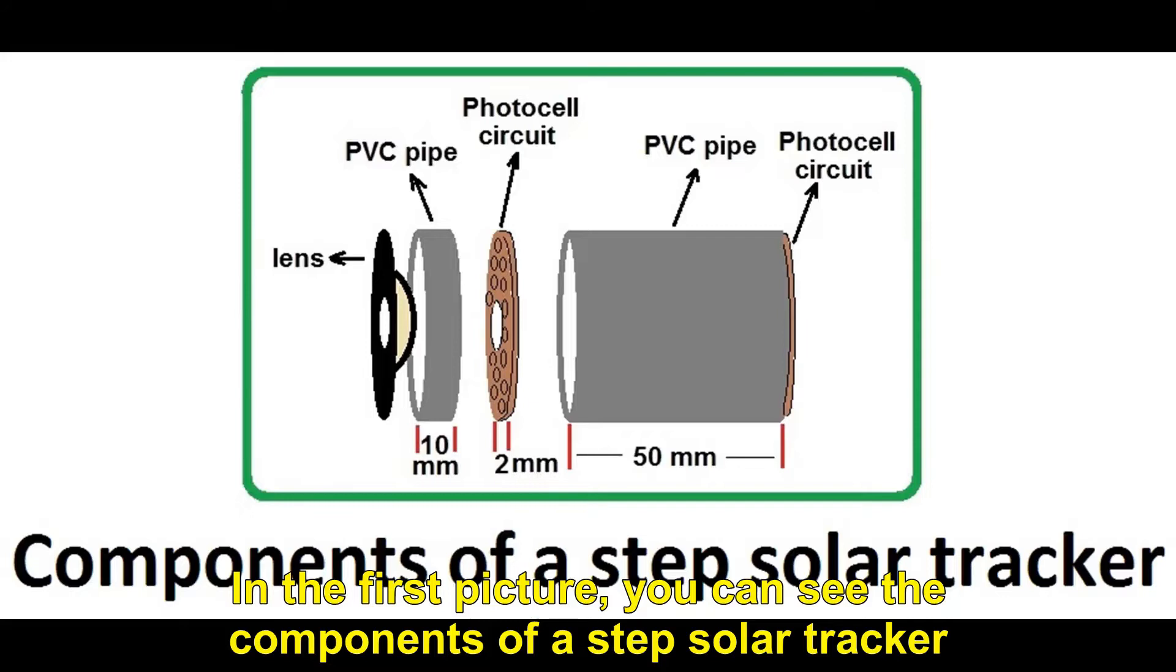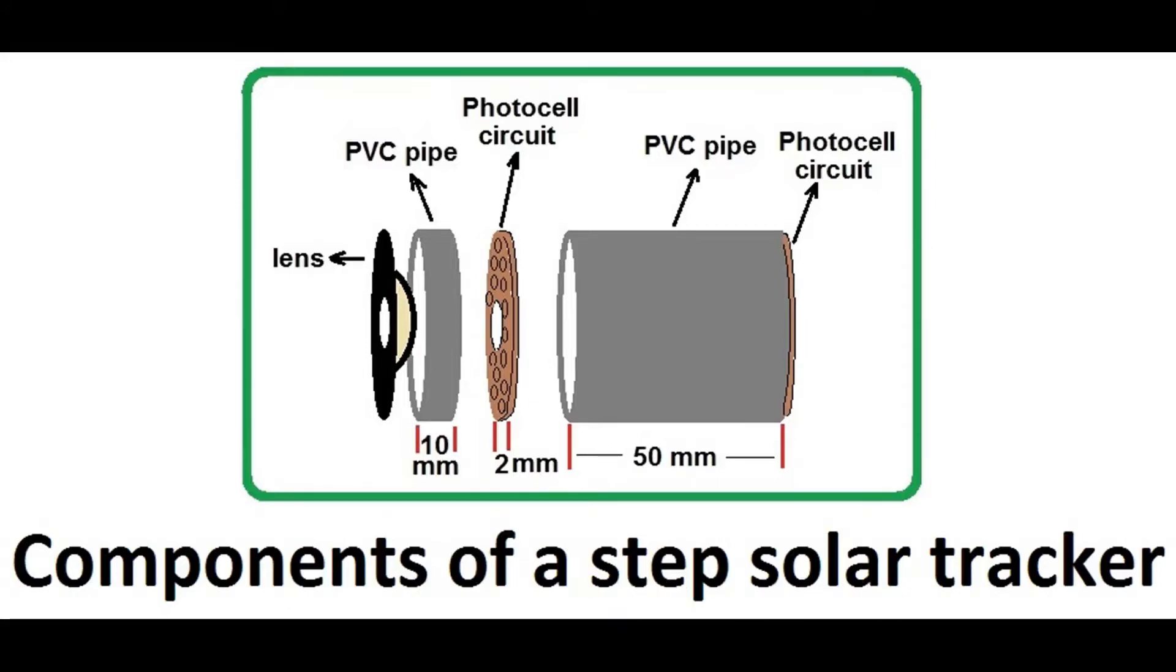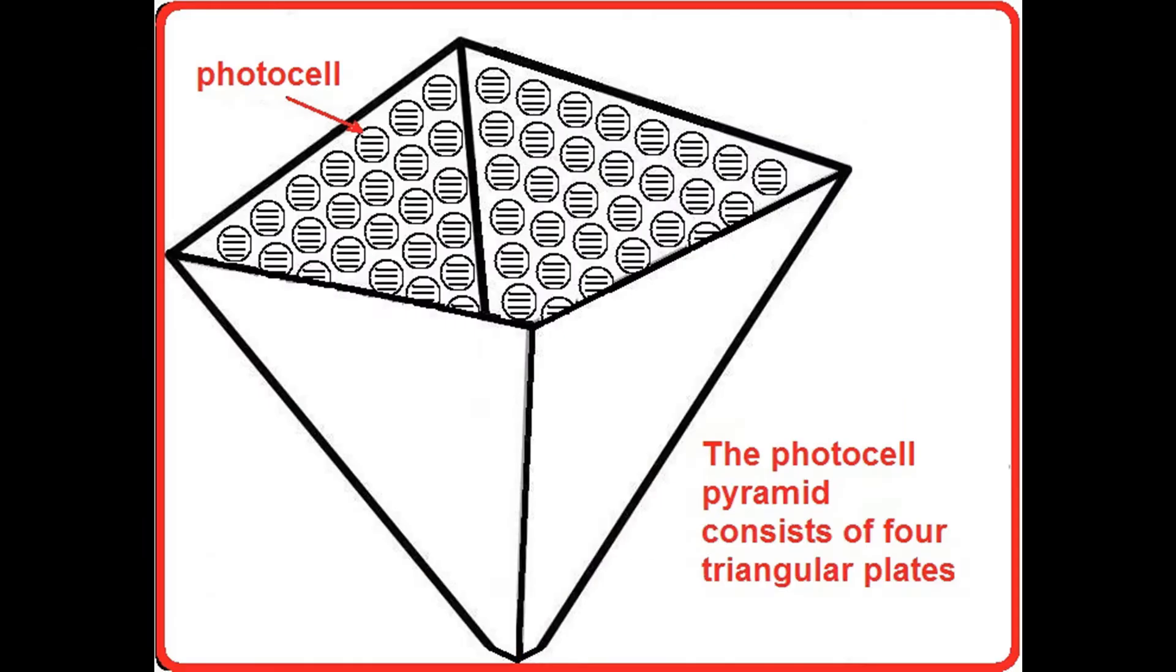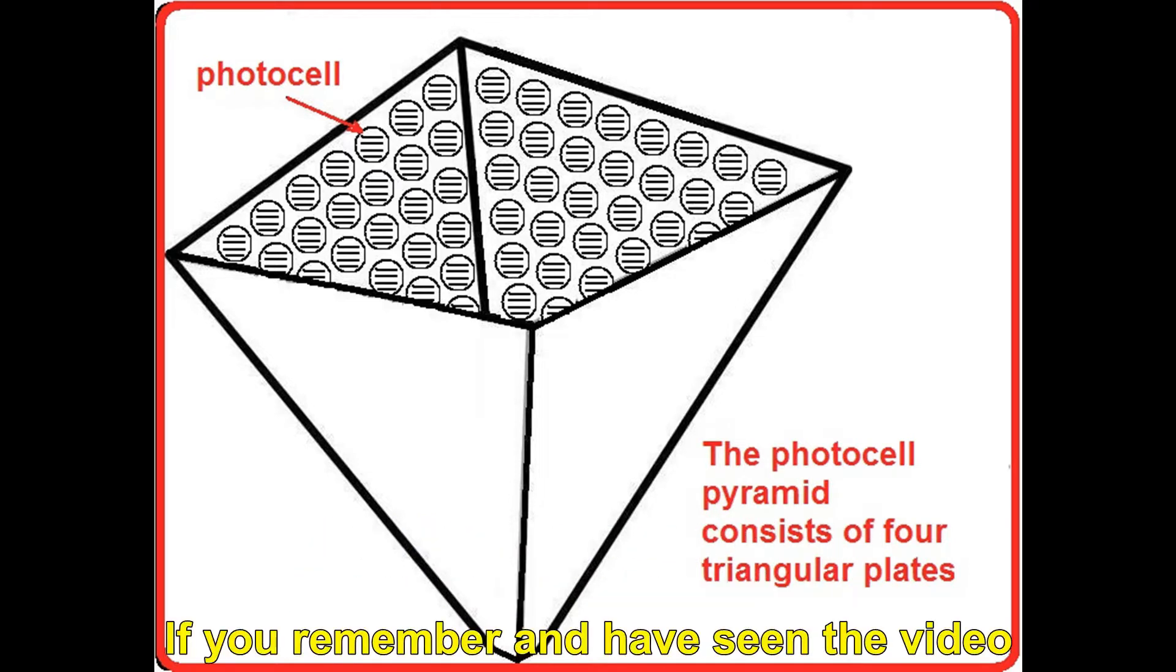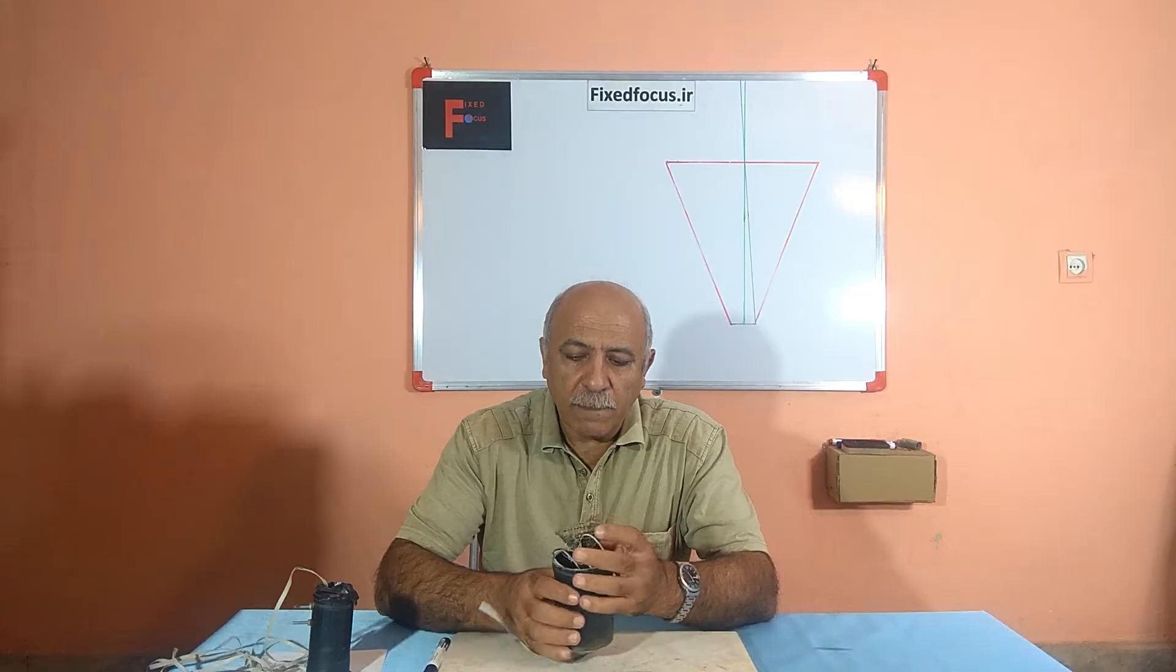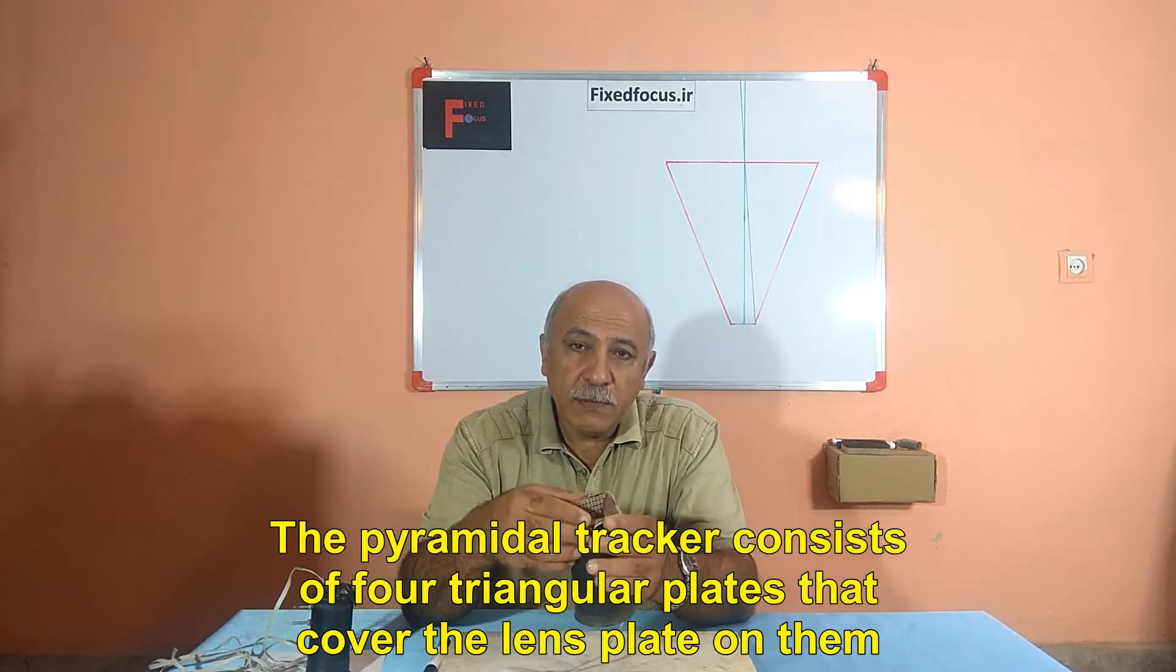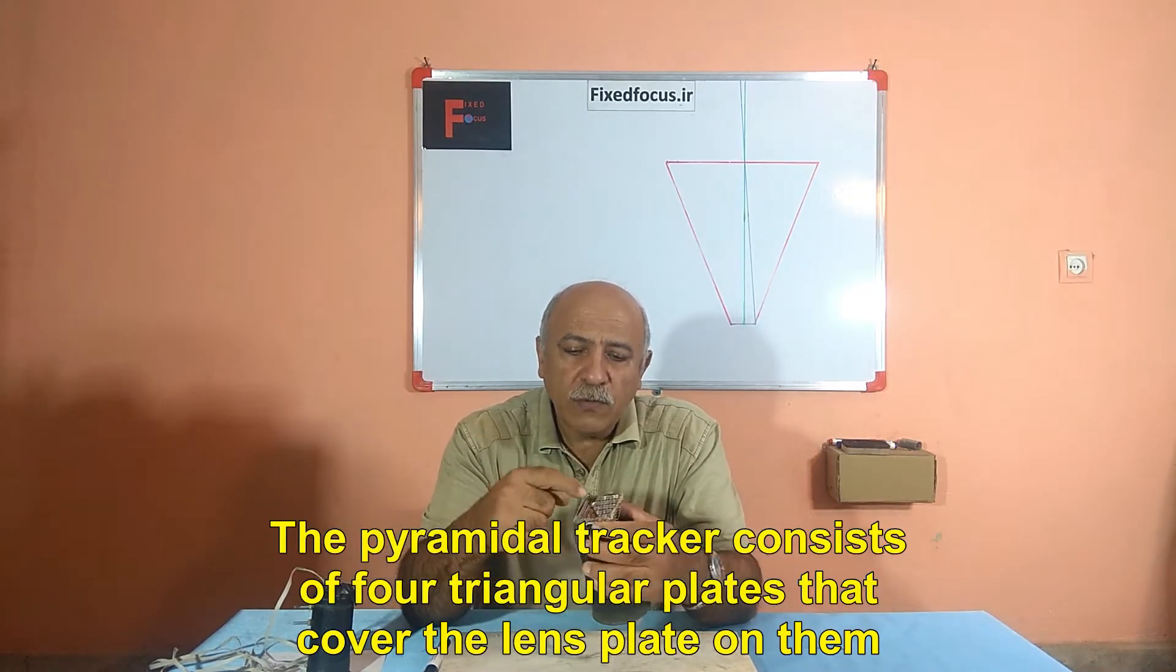In the first picture, you can see the components of a Step solar tracker. And this is an image of the triangular plates including the photocell in the Pyramidal Solar Tracker. If you remember and have seen the video, the Pyramidal Tracker consists of four triangular plates that cover the lens plate on them.